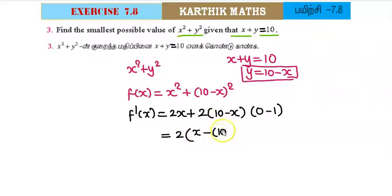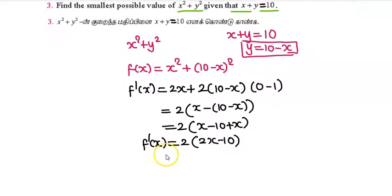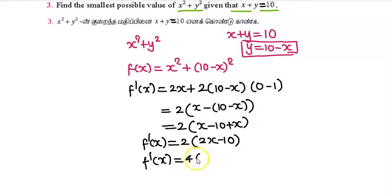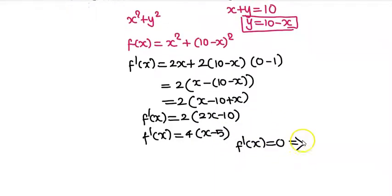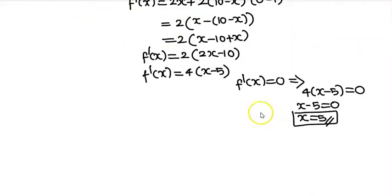Simplifying f'(x): we get 2x plus 2 into (x minus 10), which simplifies to 4 into (x minus 5). Setting f'(x) equal to 0: 4 into (x minus 5) equals 0, so x minus 5 equals 0, giving x equal to 5. This is our critical number.